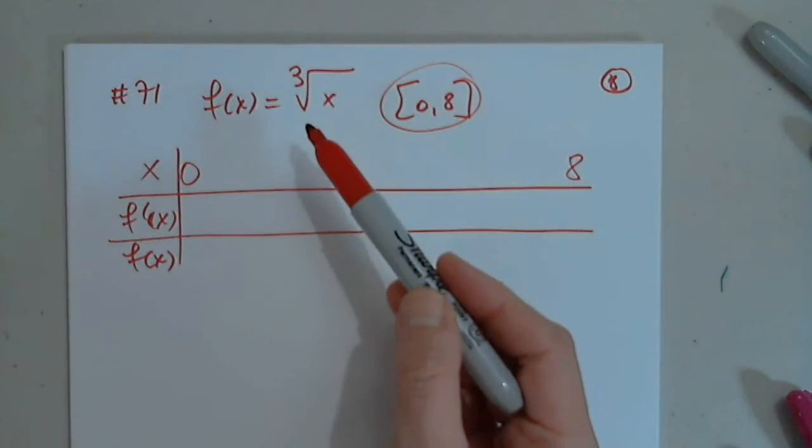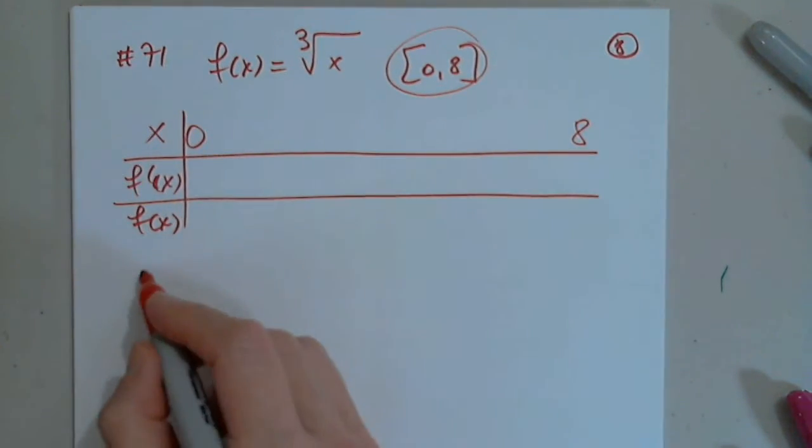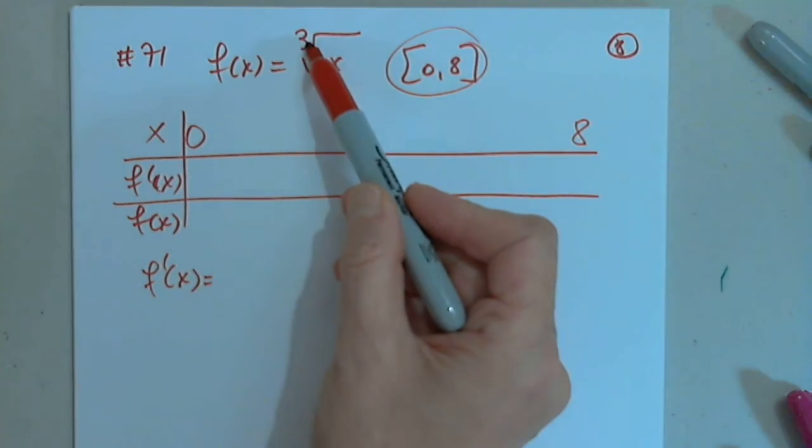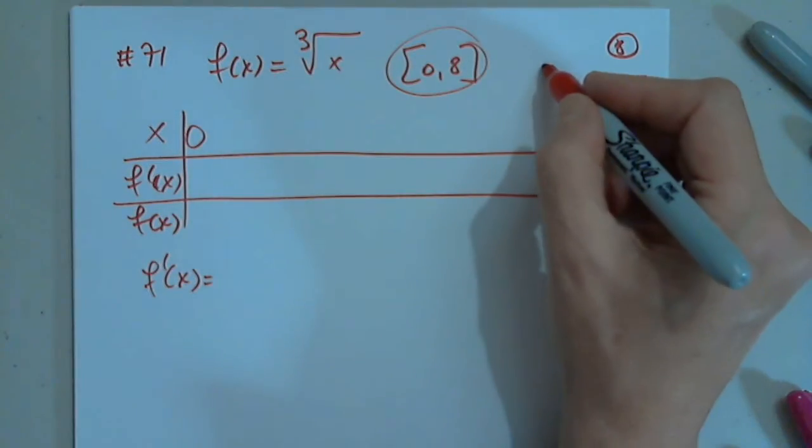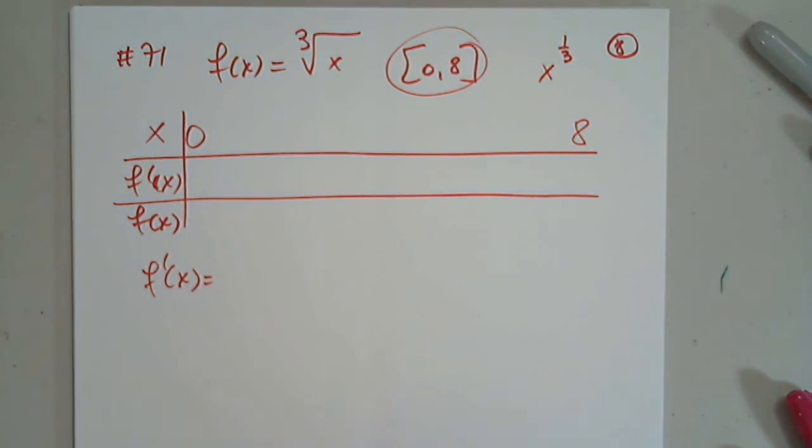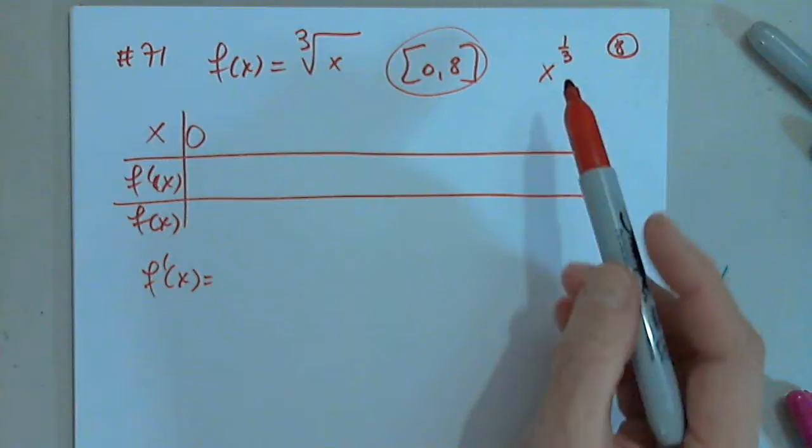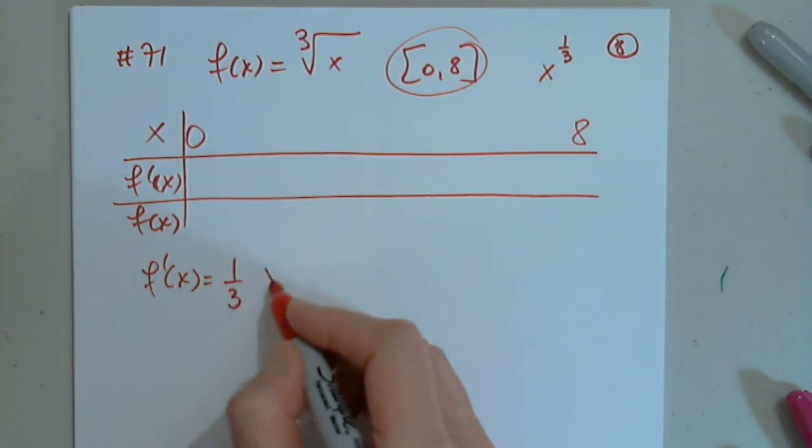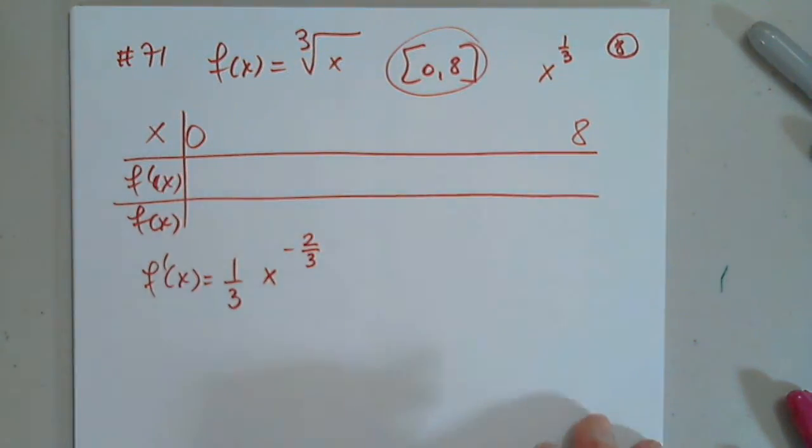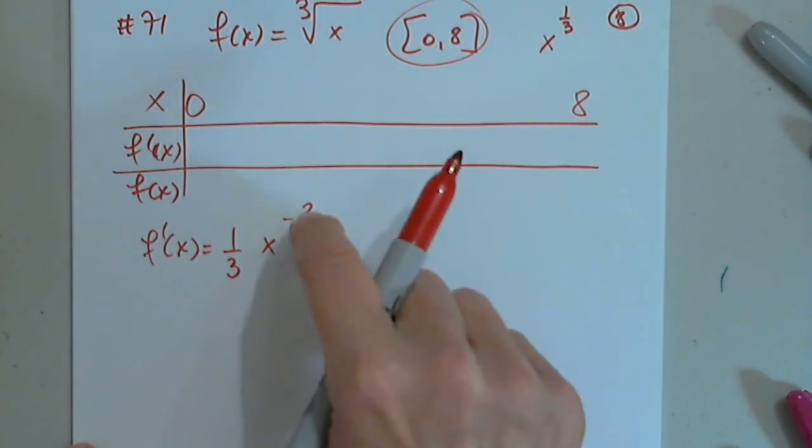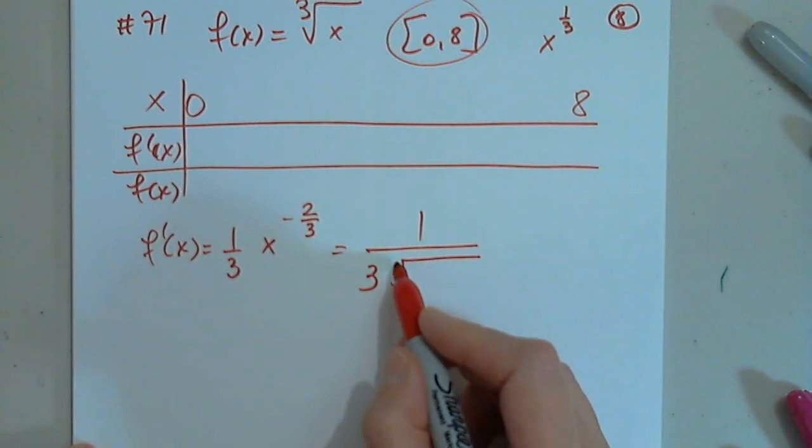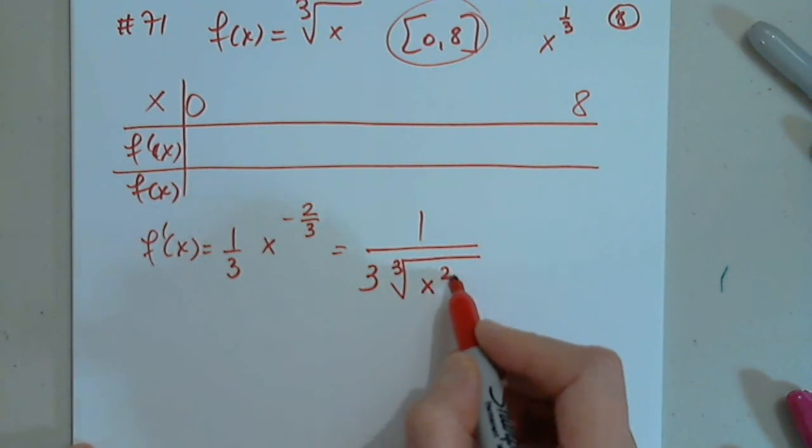So I will find the first derivative, f prime of x. Remember, the best for cube root is to change it into x to one third. For the square root, it's easy because we know the formula. But for the cube root, always change it, bring down one third, and then x to one third minus one, which is negative two thirds. So remember, power is negative. So this goes to the denominator, the cube root of x squared.